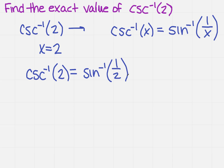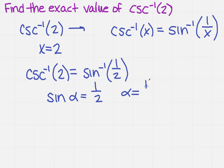Those are equal. Now I can solve the inverse sine. The inverse sine of 1 half is the same thing as saying the sine of alpha equals 1 half. What is alpha so that this equals 1 half? We know that alpha has to be pi over 6 for this to be a true statement.